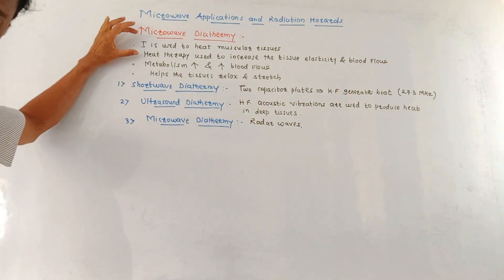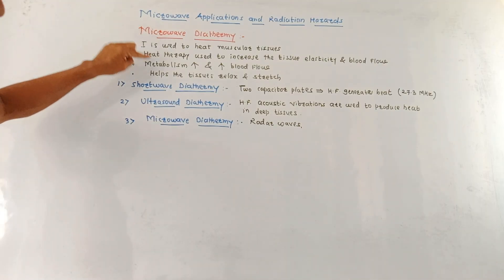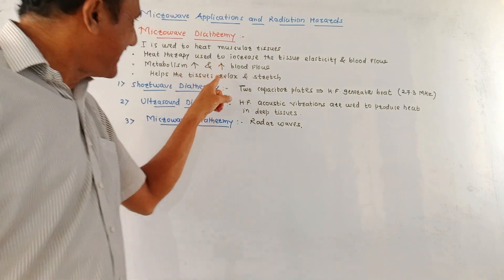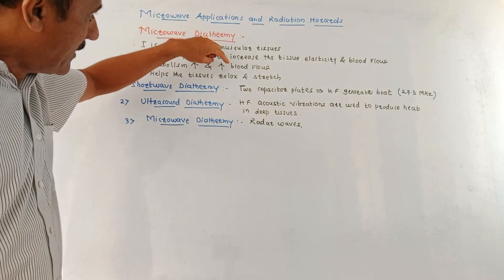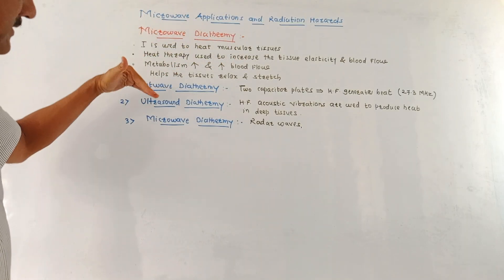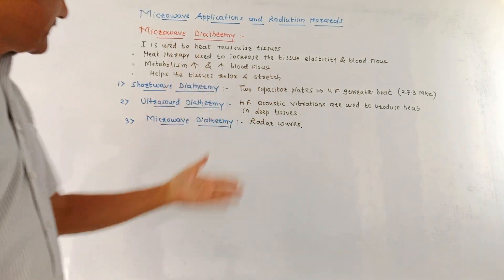Due to the application of this heat therapy which we are providing using the microwave, the metabolism increases. This upward area indicates the values are increasing, and due to increasing the metabolism, the blood flow also increases. This treatment helps the tissues relax and stretch quite easily.